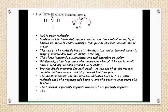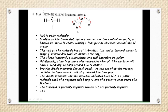This tells us that the molecule has sp3 hybridization and is trigonal pyramidal in molecular shape (tetrahedral electron geometry). This shape is asymmetrical and will therefore be polar. Additionally, since N is more electronegative than H, the electrons have a tendency to be attracted toward the N atom.